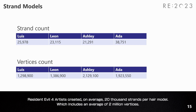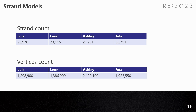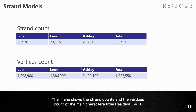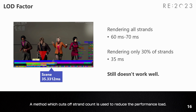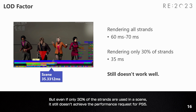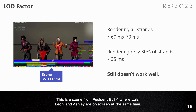About performance: Resident Evil 4 artists created on average 20,000 strands per hair model, which includes an average of 2,000,000 vertices. The image shows the strand count and vertex count of the main characters. After shading optimization, a 4-character scene runs at about 60–70 ms per frame. A method which cuts strand count is used to reduce performance load, but even using only 30% of strands in a scene, it still doesn't achieve the performance required for PS5. This is a scene from Resident Evil 4 where Luis, Leon, and Ashley are on screen at the same time.